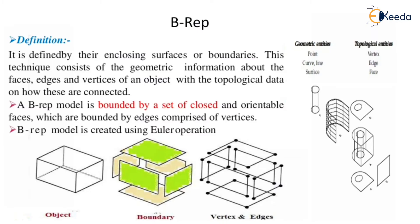Boundary representation is also called as B-Rep. It is defined by the enclosing surfaces or boundaries of an object. This technique consists of the geometric information about the faces, edges, and vertices of an object, along with topological data on how these are connected. A B-Rep model is bounded by a set of closed and orientable faces comprised of vertices, and is created using Euler operations.